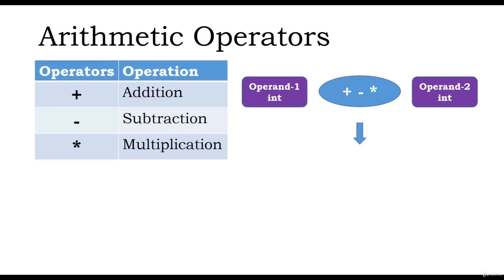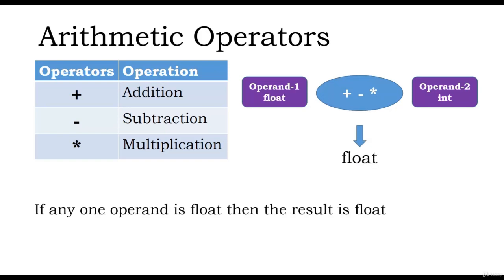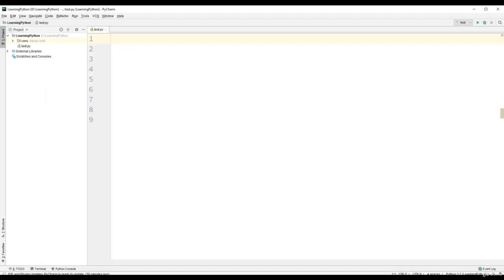For addition, subtraction and multiplication, if the operands are integers, the result is an integer. If any of the operands is a float, then the result evaluates to a float value. Let us practically see the working of addition, subtraction and multiplication operators.